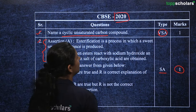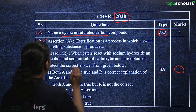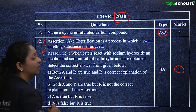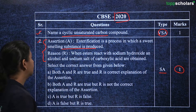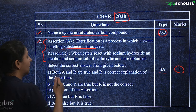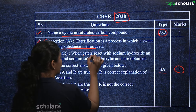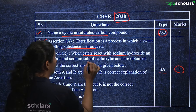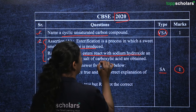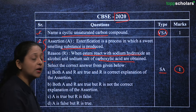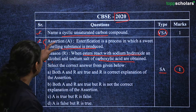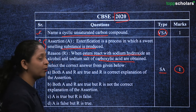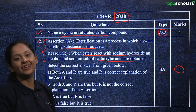The assertion states: esterification is a process in which a sweet smelling substance is produced. The reasoning states: when esters react with sodium hydroxide, alcohol and sodium salt of carboxylic acid are obtained. You have to analyze both statements and select the correct option.